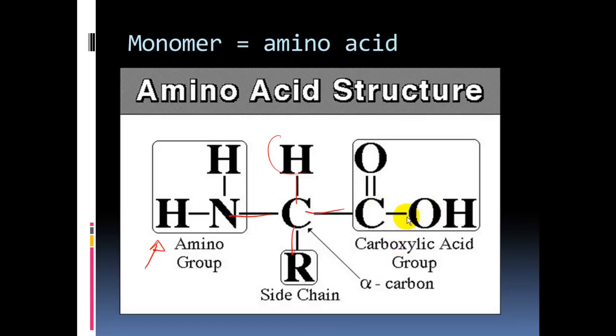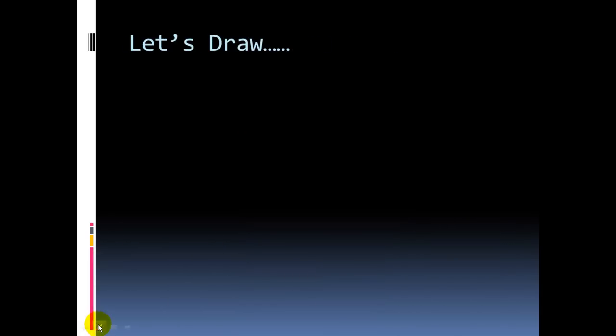Let's draw one together—this will help us remember. The central carbon wants four bonds, so we draw four lines. Place the H and R group, which varies, on one end and the amino group on the other. Then add another carbon double-bonded to an oxygen.